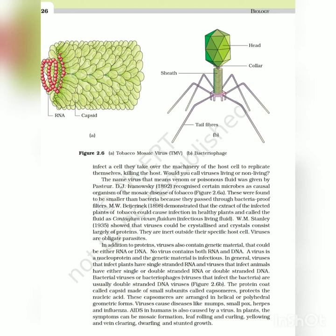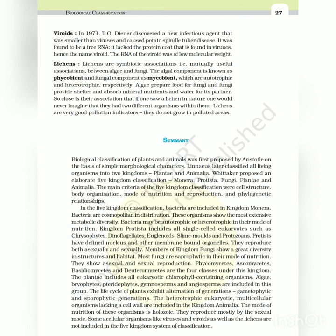Viroids - In 1971, T.O. Diener discovered a new infectious agent that was smaller than viruses and caused potato spindle tuber disease. It was found to be a free RNA - it lacked the protein coat that is found in viruses, hence the name viroid. The RNA of the viroid was of low molecular weight.